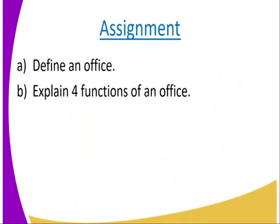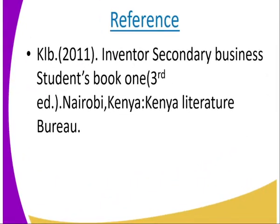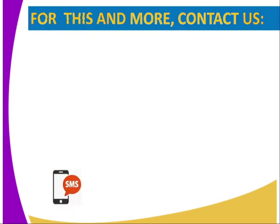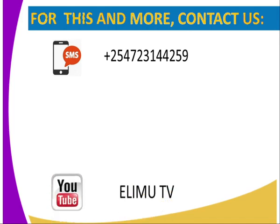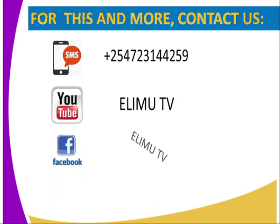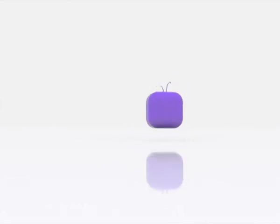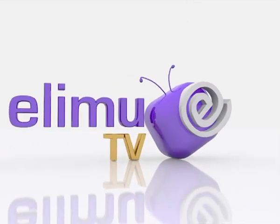The activity for today: define an office, then explain four functions of an office. For reference, go to KLB 2011, Inventor Secondary Business Student Book 1, then edition. If you have any information you want to pass to us, you can reach us through SMS, YouTube, Facebook, or Twitter. Stay tuned to ERIM TV. Thank you.